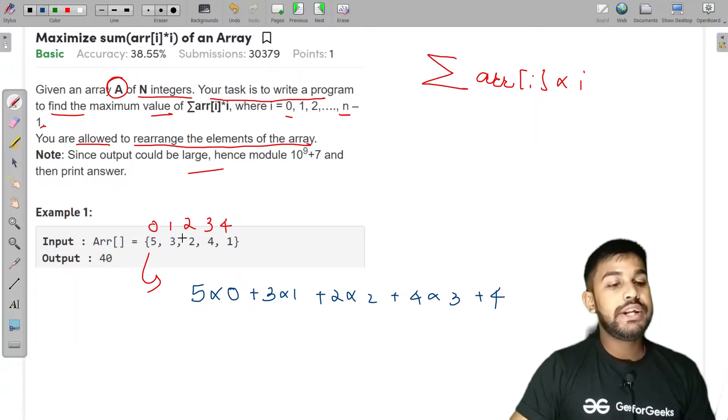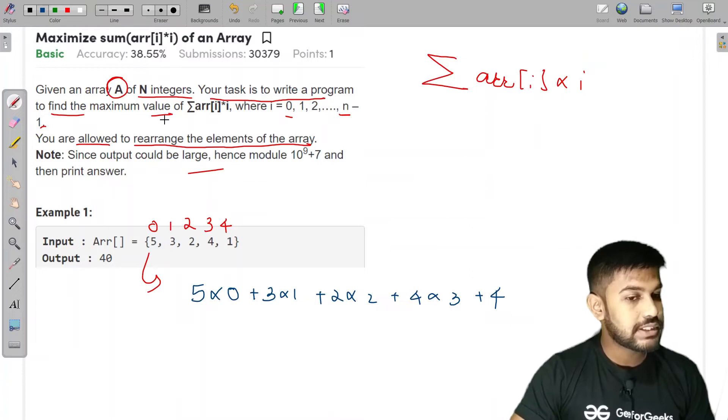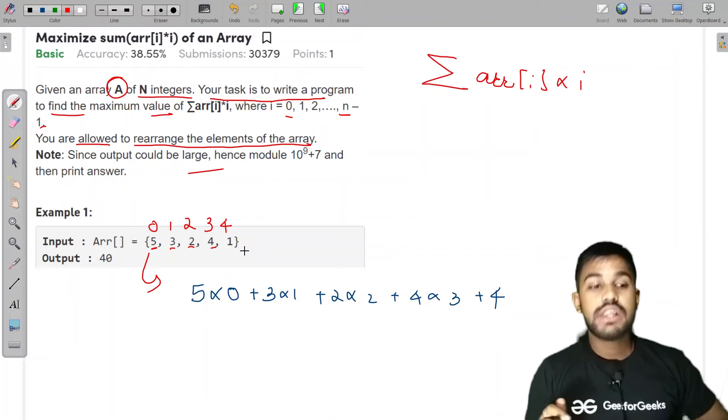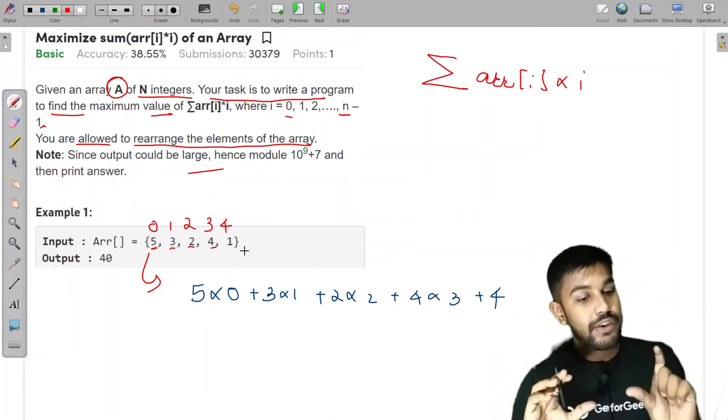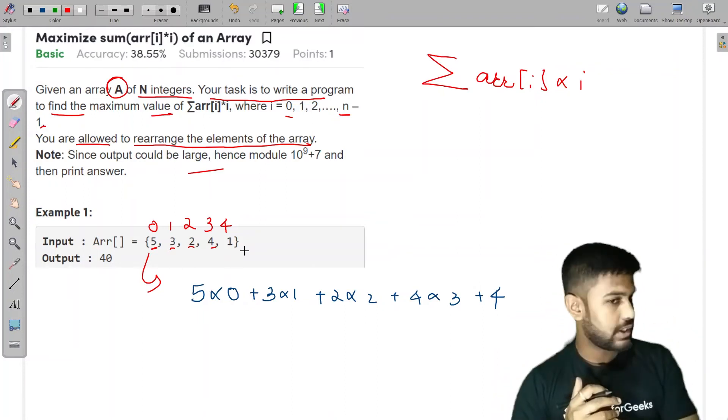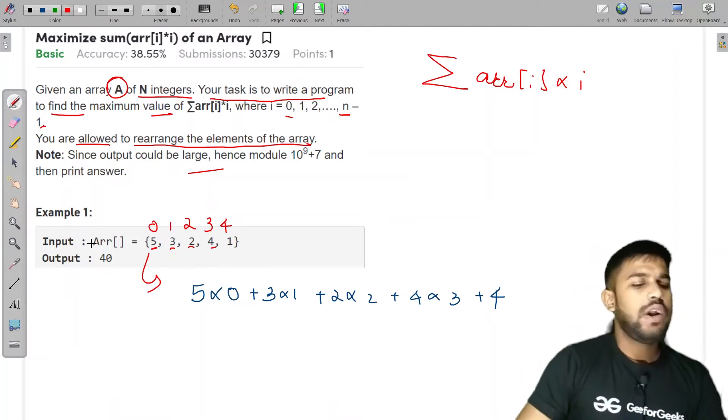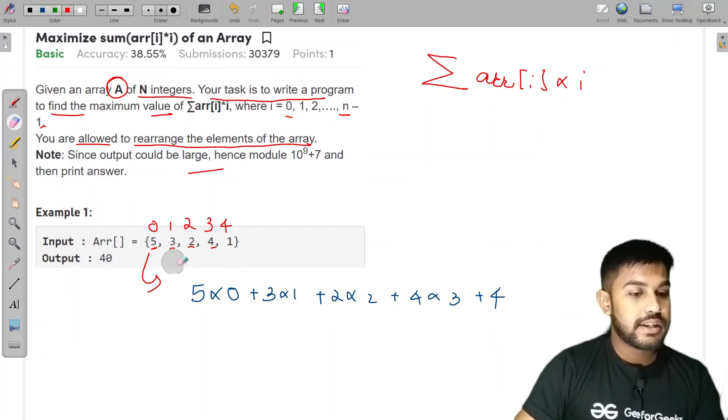Now the thing is that we need to maximize the value. To maximize the value of this thing, this AI would remain same. We can't change the values. The only available option is we can rearrange the values. If we want to rearrange, then what is the most optimal way? Now let us think about this. Which is the most profitable element among this?